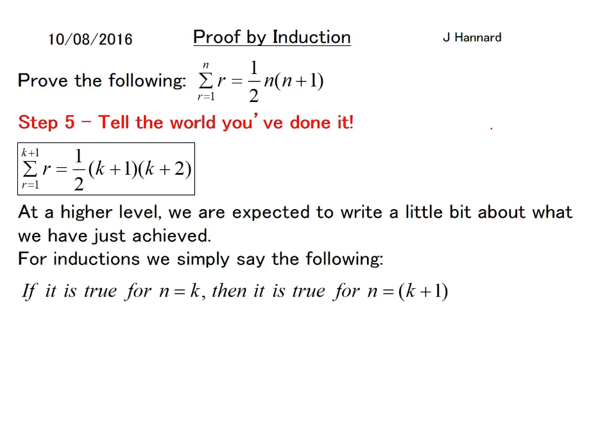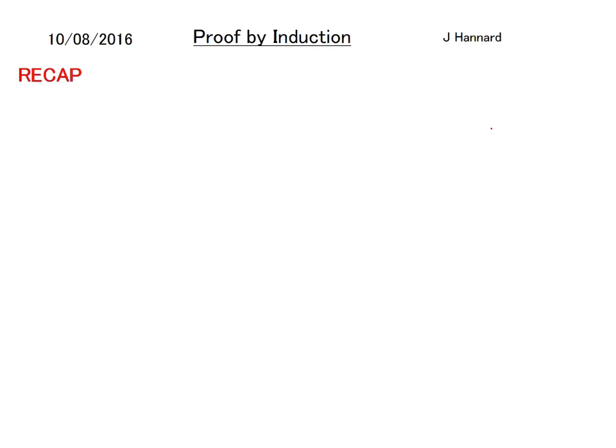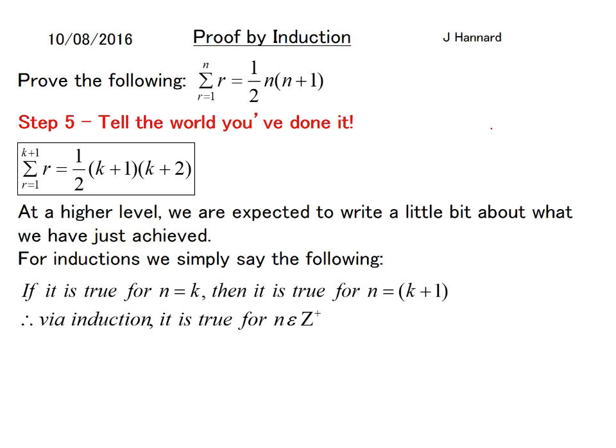And now the final bit, step 5, is you tell the world that you've done it. At a high level we're expecting to write a little bit about what we've just achieved. So for inductions we simply say the following: If it's true for n equals k, then it's true for n equals k plus 1. And therefore via mathematical induction it is true for n is a member of any of the positive integers from 1 to infinity. And that is your first induction proof done.